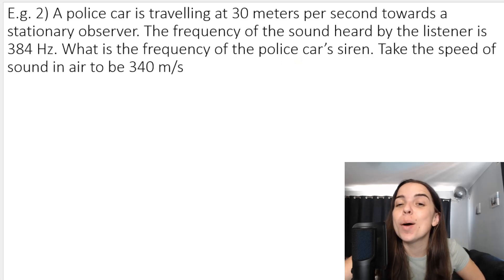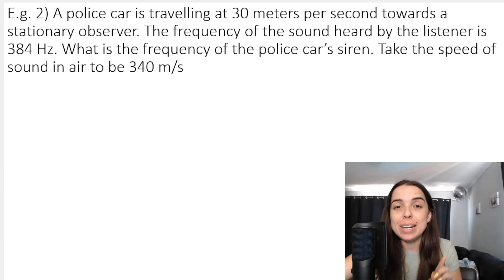So let's take a look at example two. We've got a police car traveling at 30 meters per second towards a stationary observer. So immediately we know that the police car must be the source. The frequency of the sound heard by the listener is 384 Hz. What is the frequency of the police car's siren? Take the speed of sound in air to be 340 m/s.